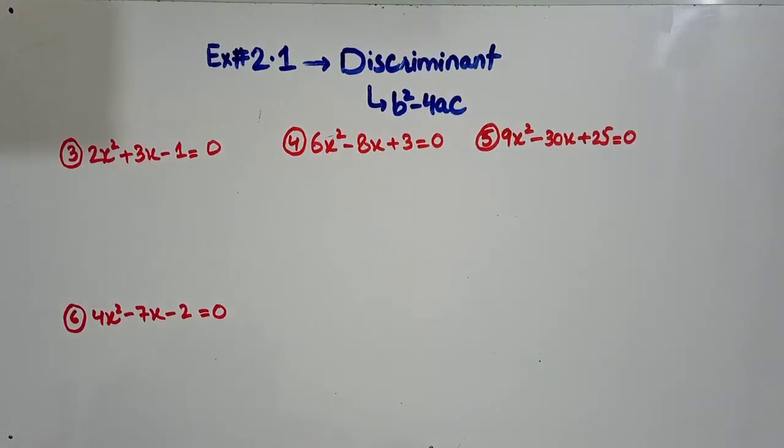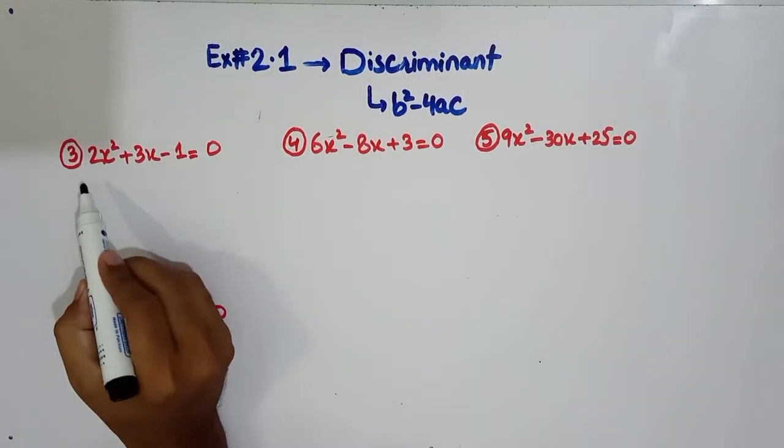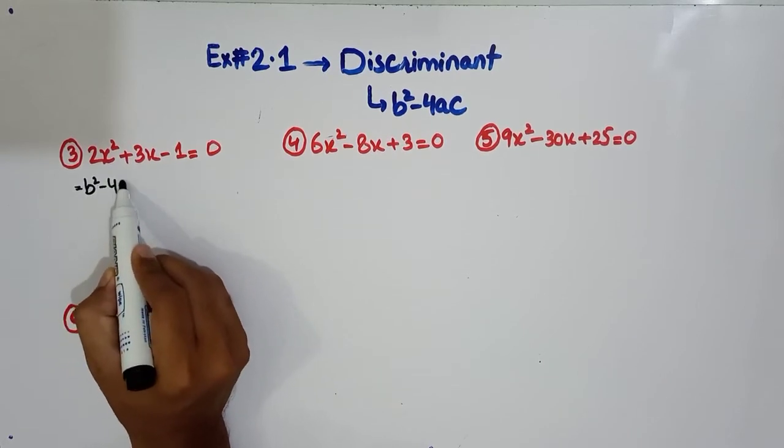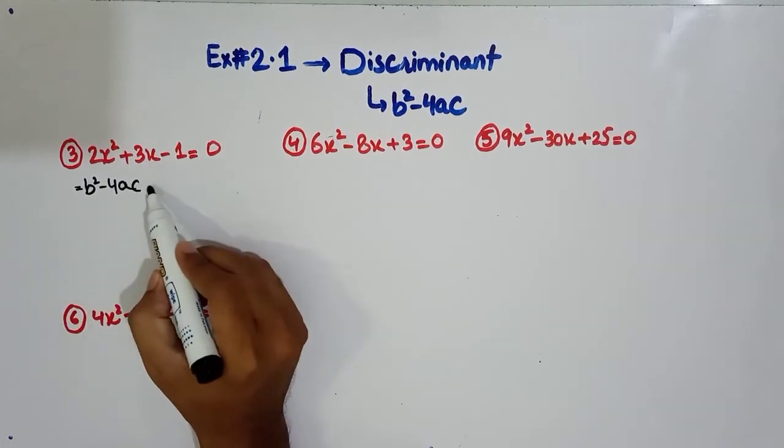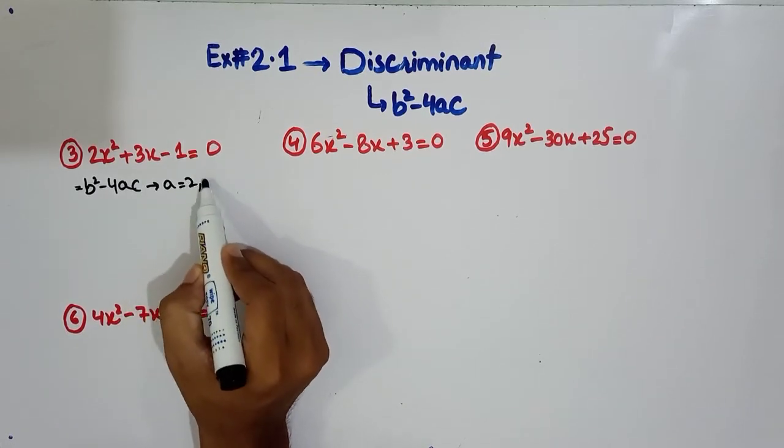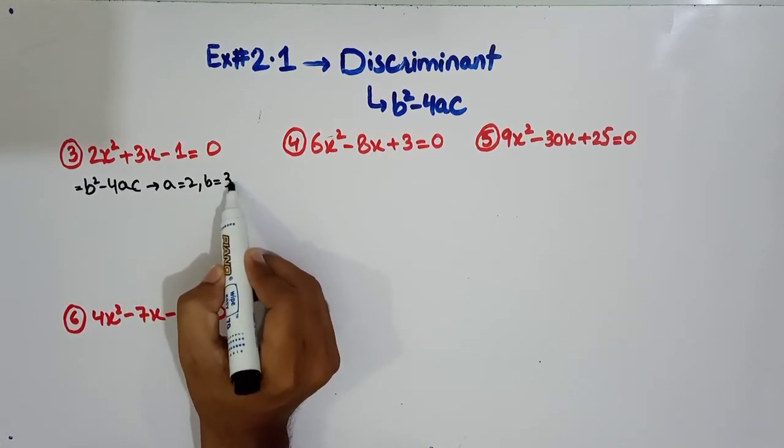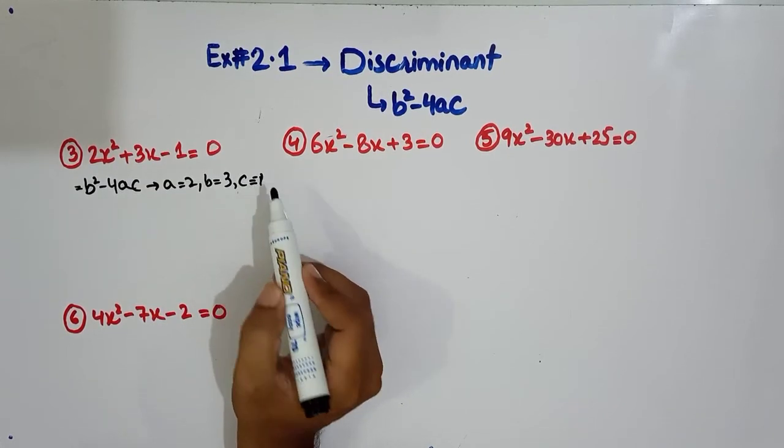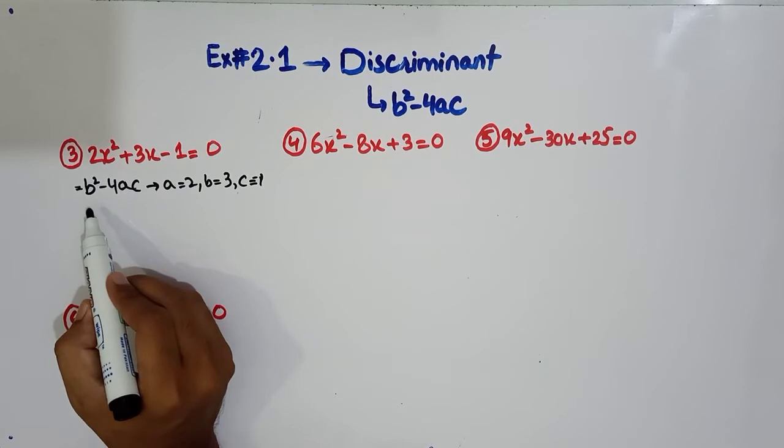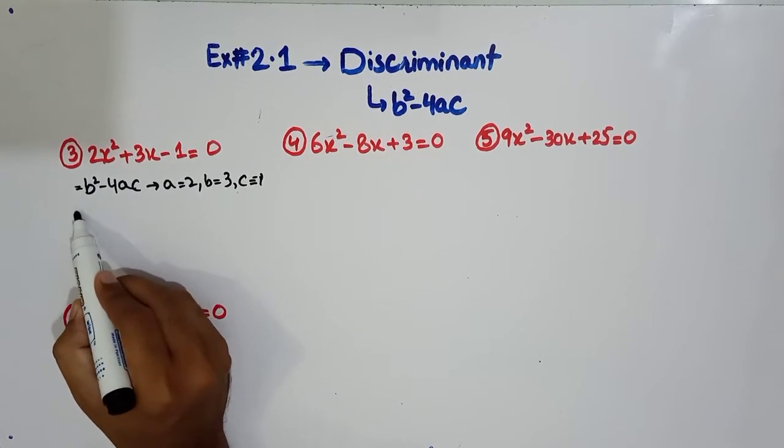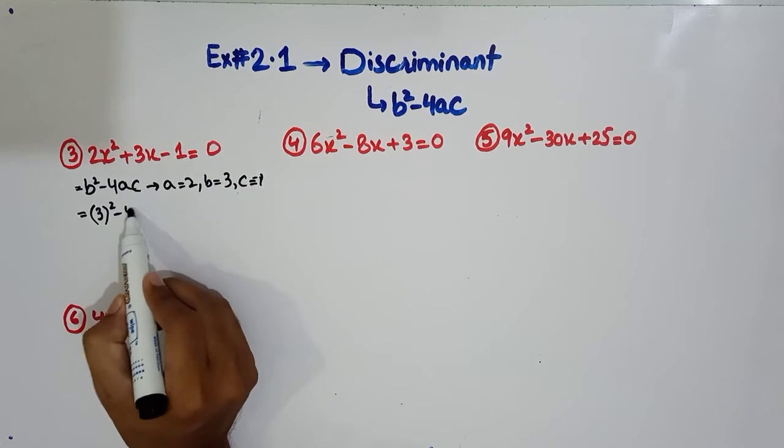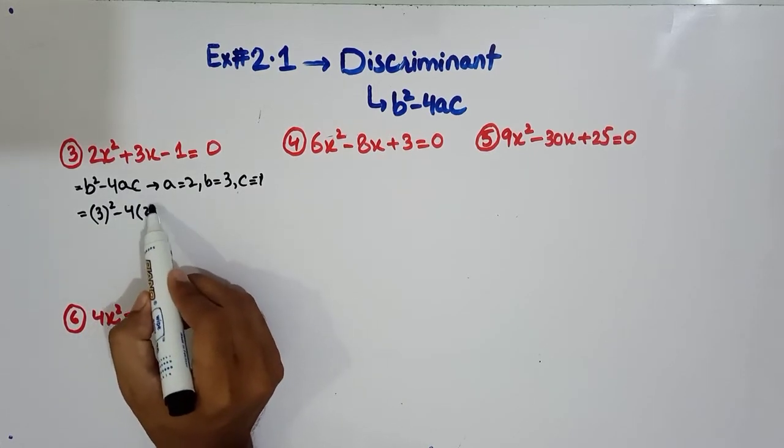Now I have some different questions here so we will practice them here. So we have to write discriminant. We have written a, b, c value. A, b, c value and you have minus 1. Now you have to write discriminant, you have to put a, b, c values and then you have to answer.